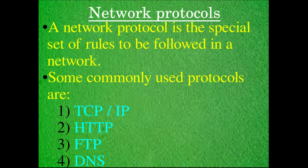The five basic elements are: sender, receiver, medium, message, and protocol. Protocol is one of the basic elements of data communication. It is nothing but a special set of rules to be followed in a network.